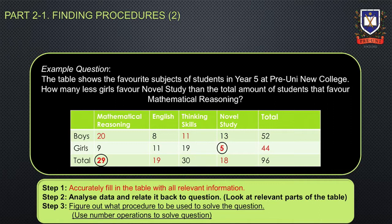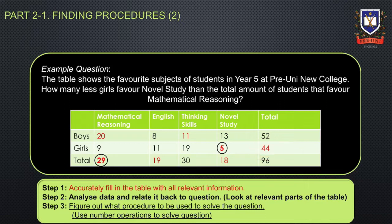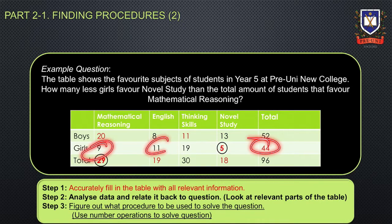Firstly, let's determine the number of girls who actually studied novel study. There are 96 people in total, so 96 minus 52 gives us 44 girls altogether. To find the number of girls who study novel study, we do 44 minus 9 minus 11 minus 19, which results in 5 girls who favour novel study.